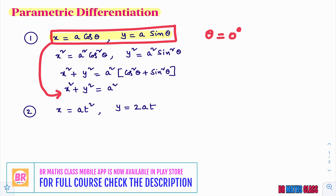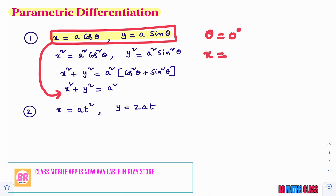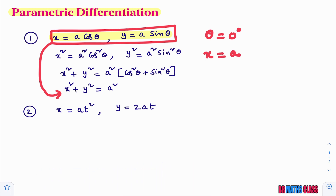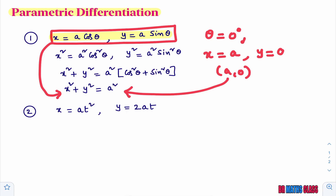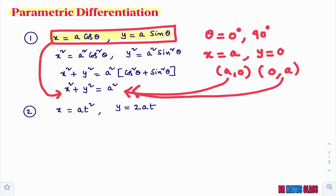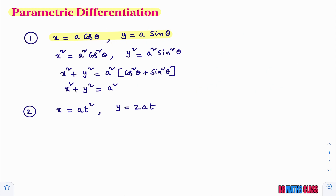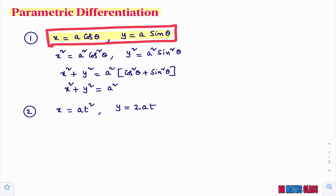For example, if I take theta equal to 0 degrees, x equals a into cos 0, and cos 0 degrees value is 1, so x equals a, y equals 0. So, (a, 0) is a point on this circle. For different values of theta, you will get different points on the curve. If I take theta equal to 90 degrees, I will get (0, a). This is a point on this circle. So, this type of equations are known as parametric equations — they look like two curves, but they represent only one curve.